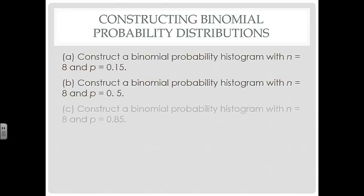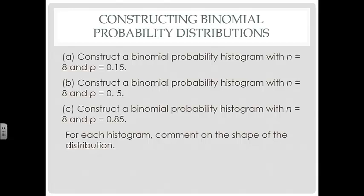Now let's look at binomial probability distributions by comparing three histograms, each with N = 8 trials but different probabilities of success: 15%, 50%, and 85%. We use P(X) = nCx · p^x · (1-p)^(n-x) to compute probabilities for X = 0 through 8 in each case. The only difference between the three distributions is the probability of success.